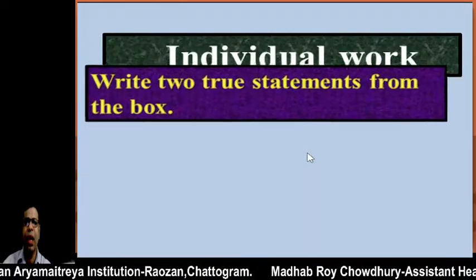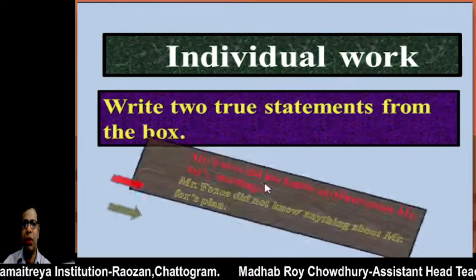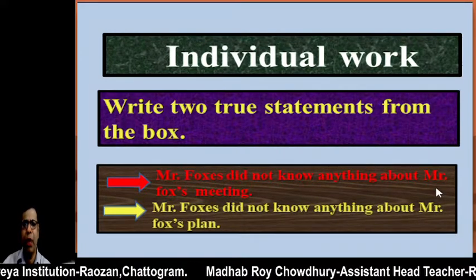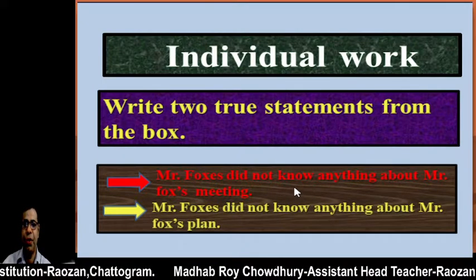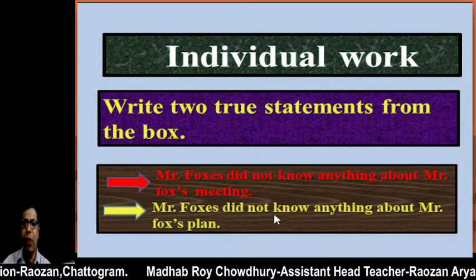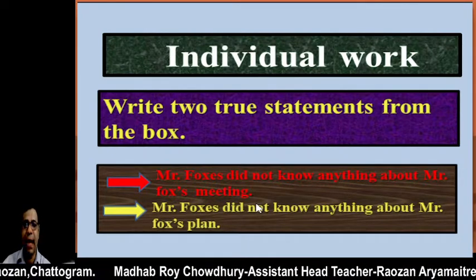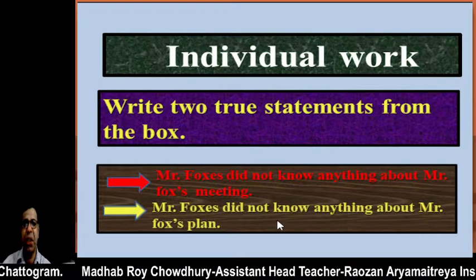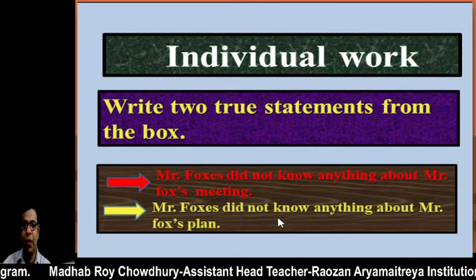Now look at the text: A fox was walking through the jungle. He fell into a trap and lost his tail. He felt very sad and ashamed. He called a meeting and told all the foxes to cut off their tails. But a wise fox understood his plan, and they went away. Now, write true or false for these statements. After discussing with the fox without a tail, the other foxes understood that there was a sinister purpose behind his suggestion — this is true.